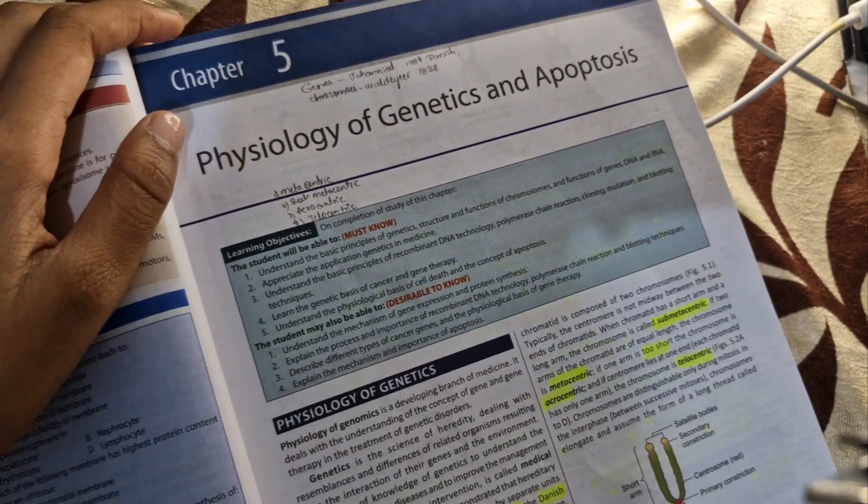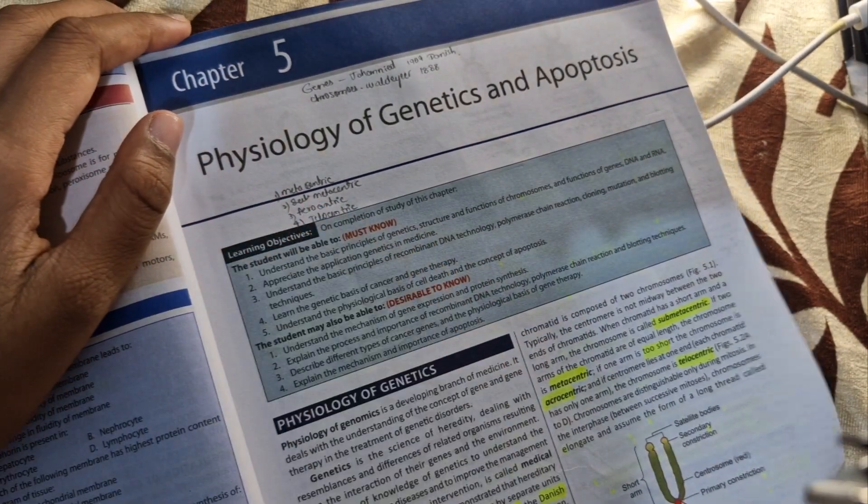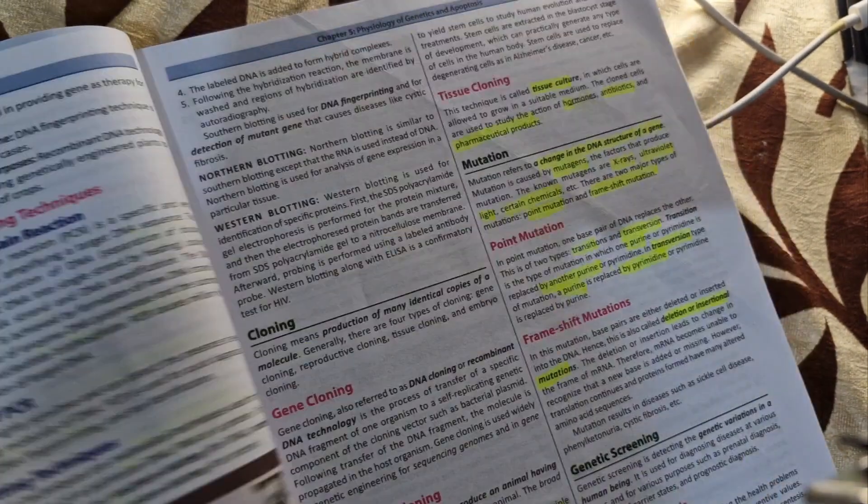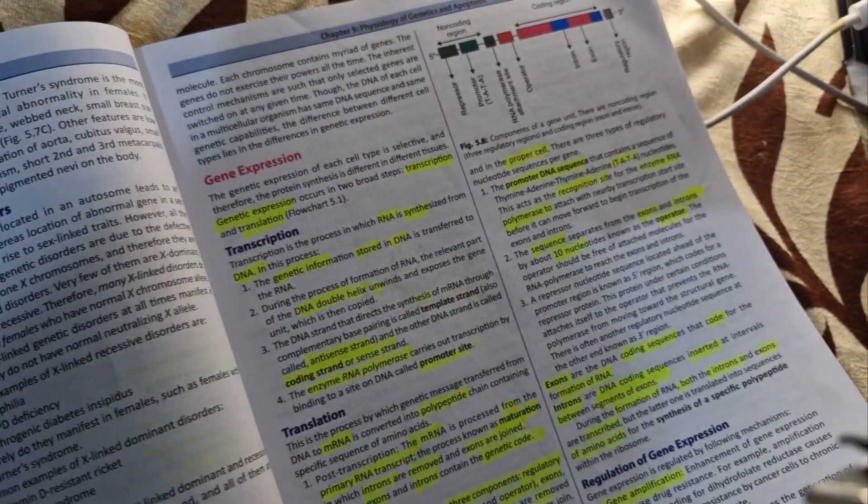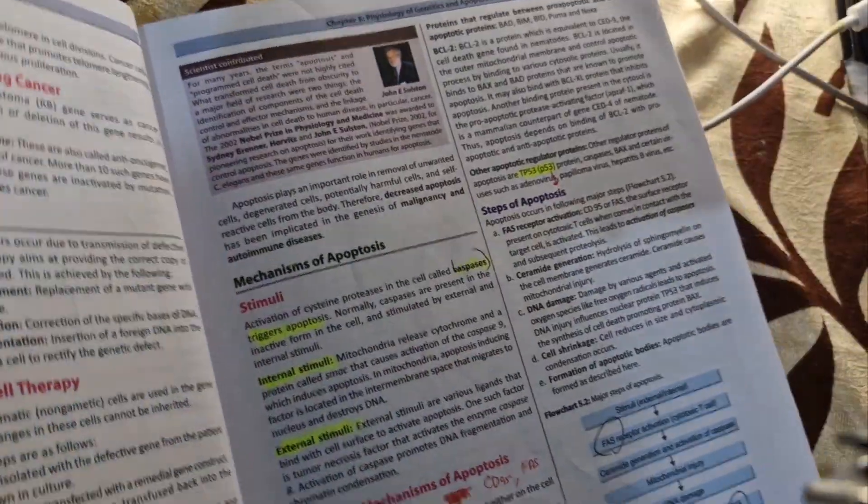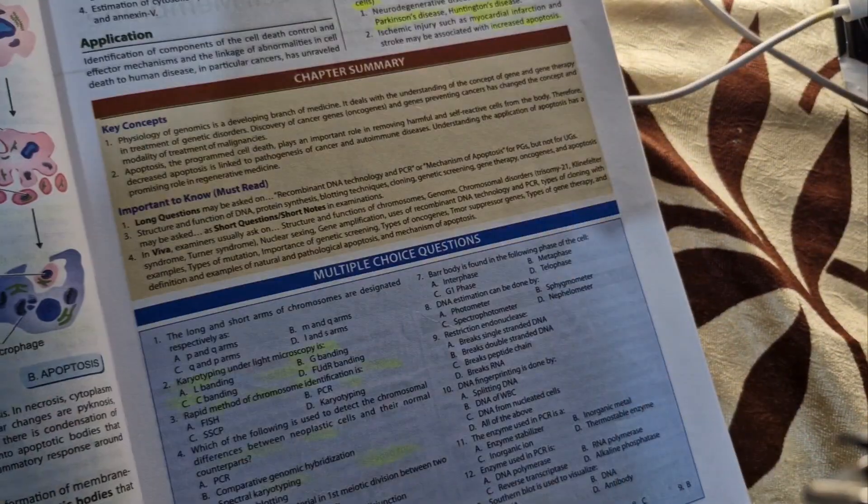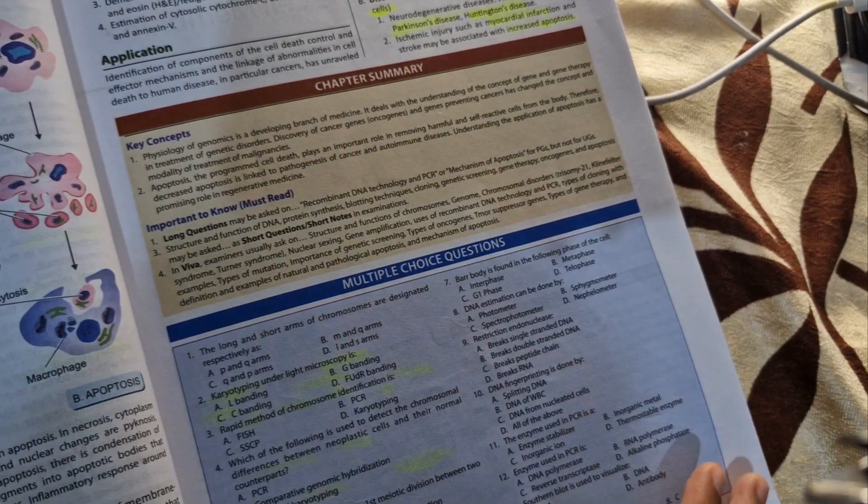From chapter 5, physiology of genetics and apoptosis. Apoptosis is important for 5 and 10 mark question - only that single question is important into all this flowchart. Diagrams as much as possible.